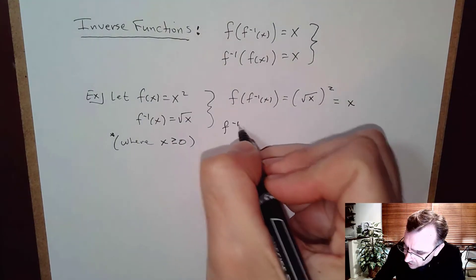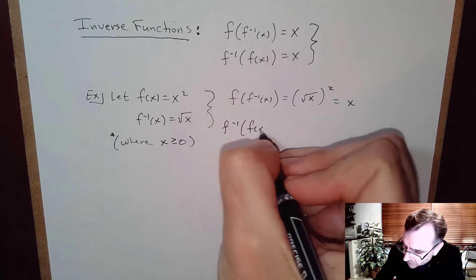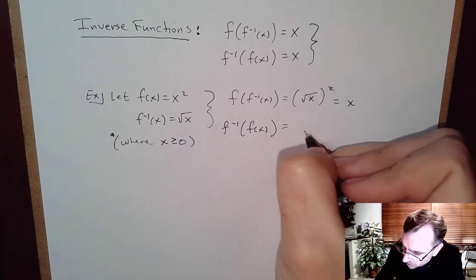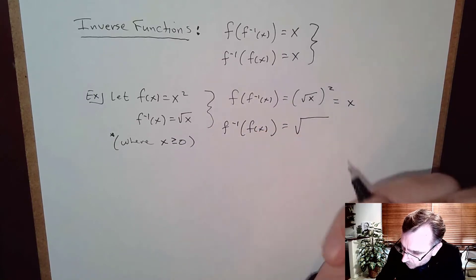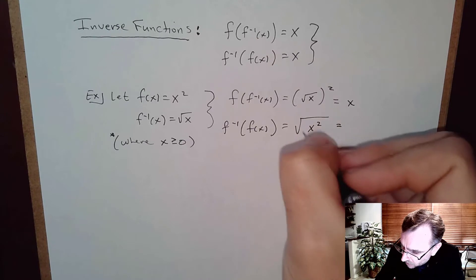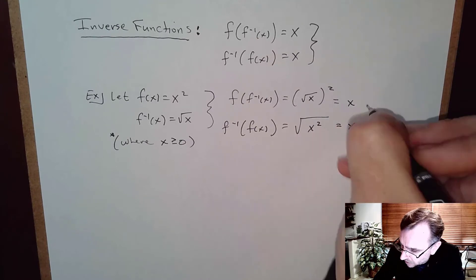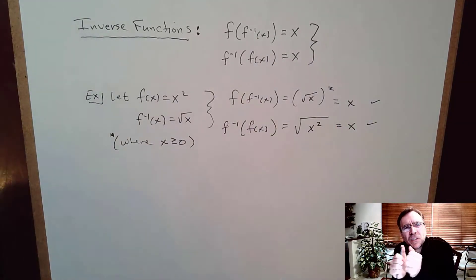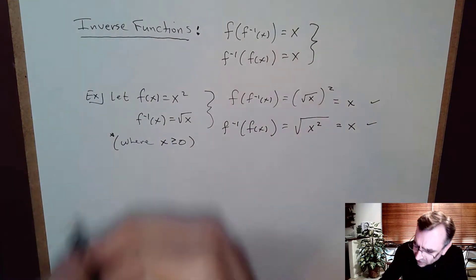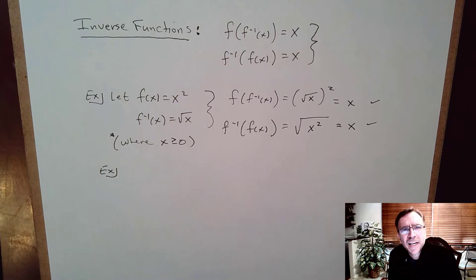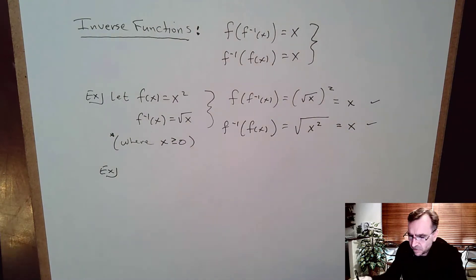When I do it the other way — F inverse of F of X — I look at F inverse first, which is the square root, and plug in X squared. The square root of X squared is X. So you can see inverse functions undo each other. It turns out sine, cosine, and tangent can be defined as functions and so they do have inverses.